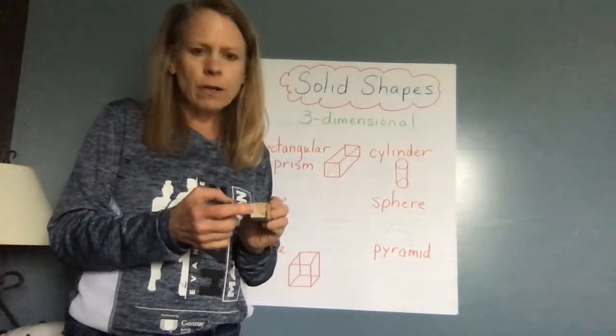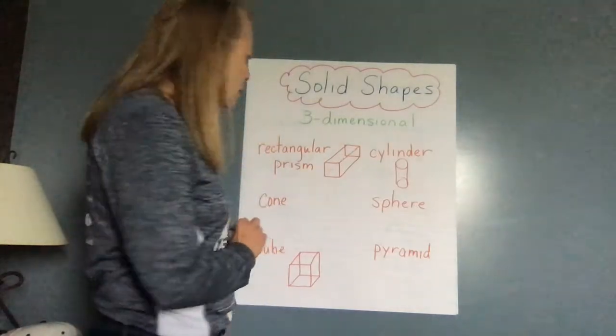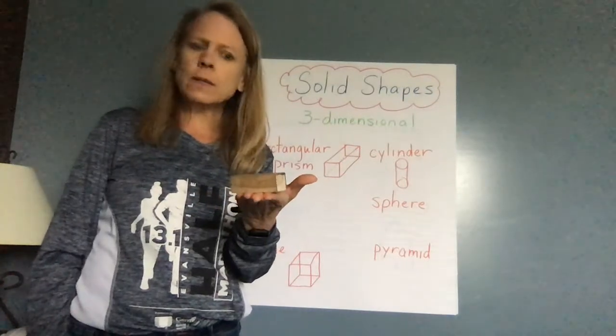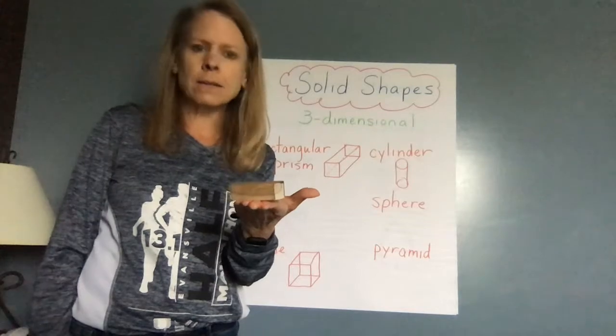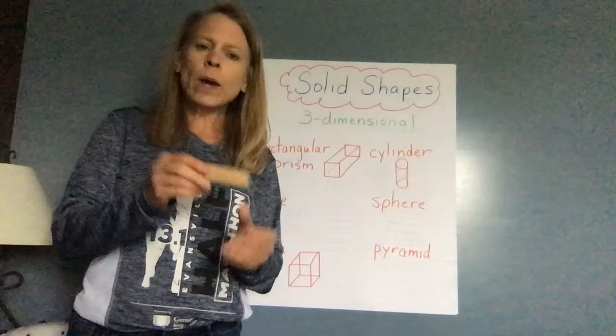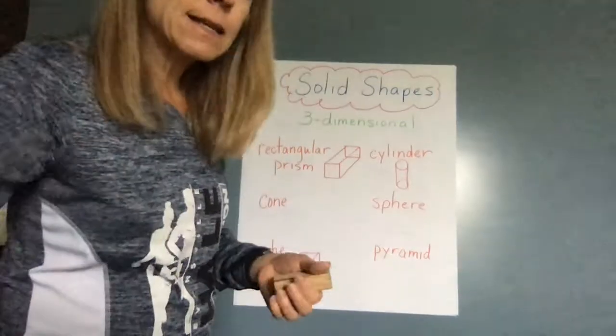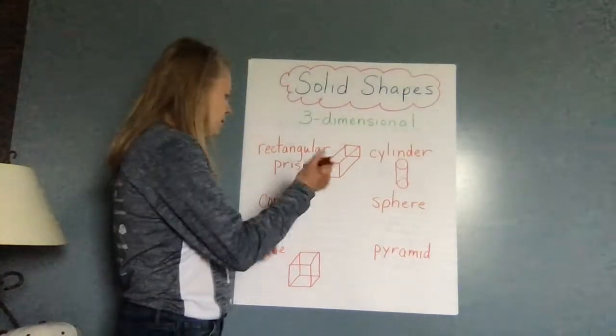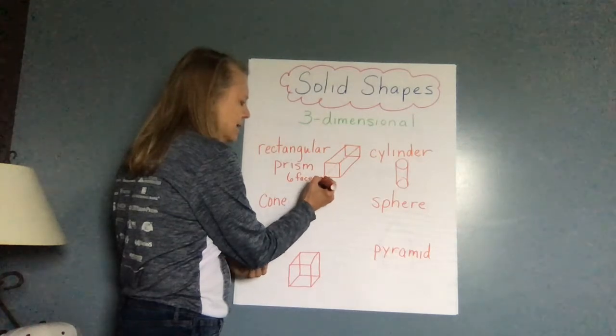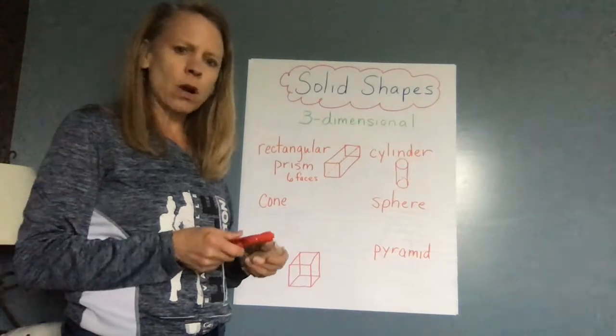Most of the faces of a rectangular prism are rectangle. It does have two of the faces are squares. In a rectangular prism, it reminds me of what? Boxes. Boxes are rectangular prisms. A rectangular prism has six faces. And the face is a rectangle. Most of the faces are rectangles.